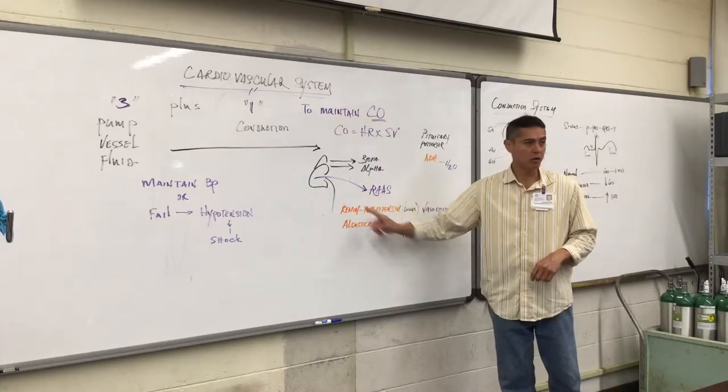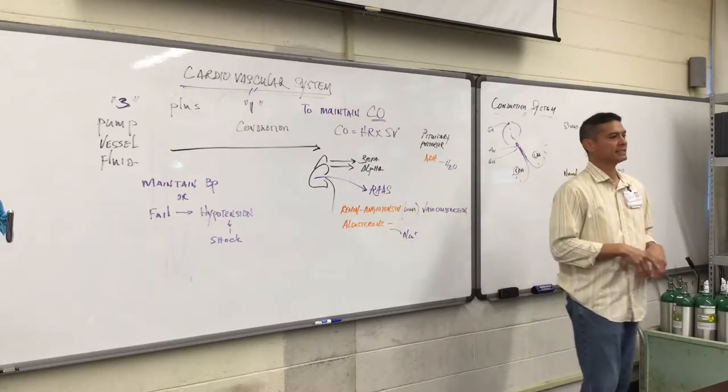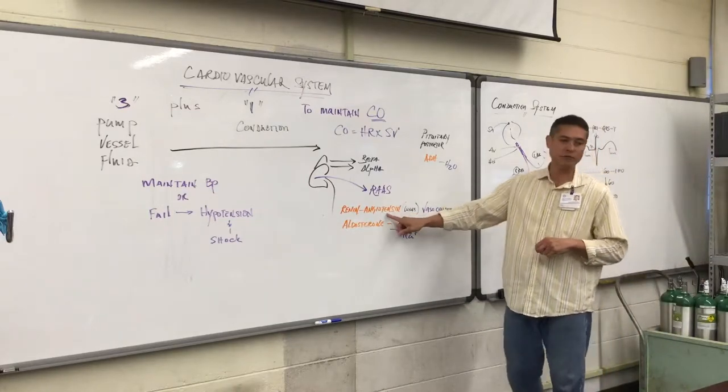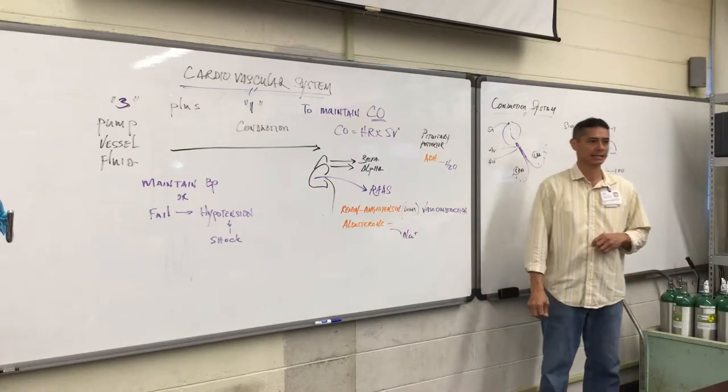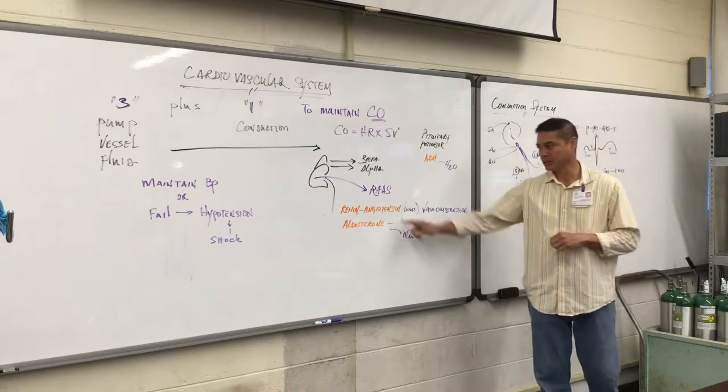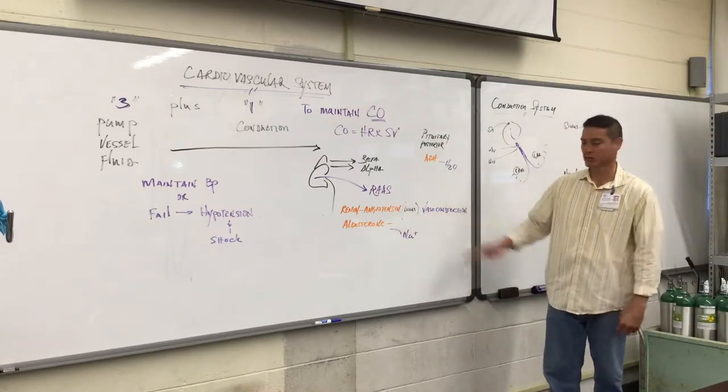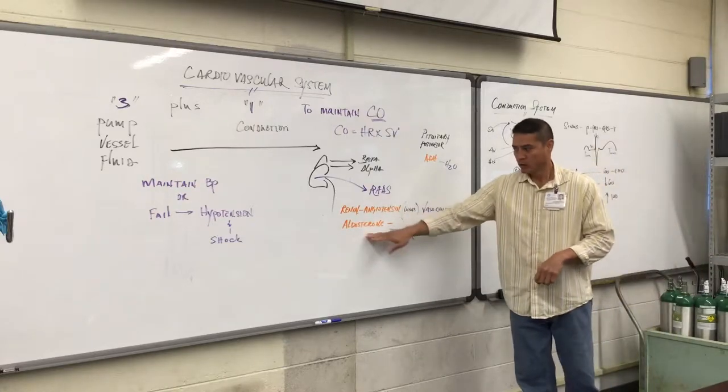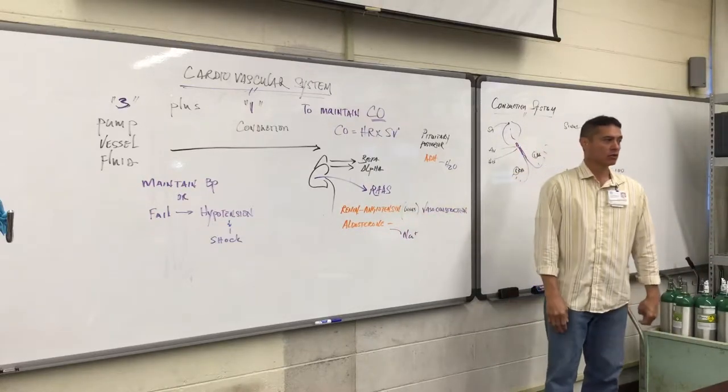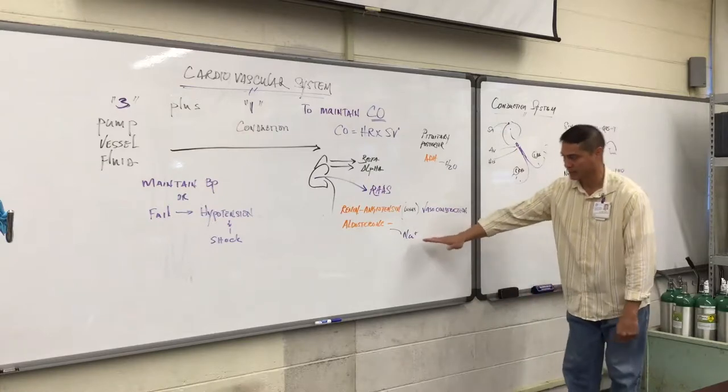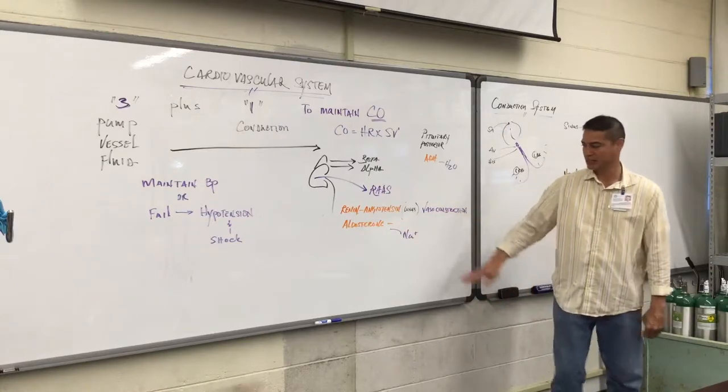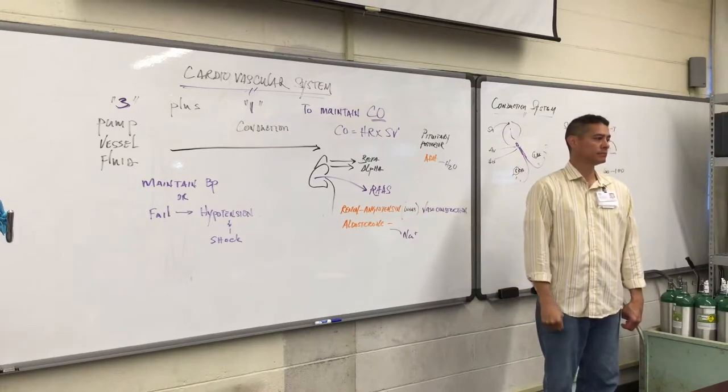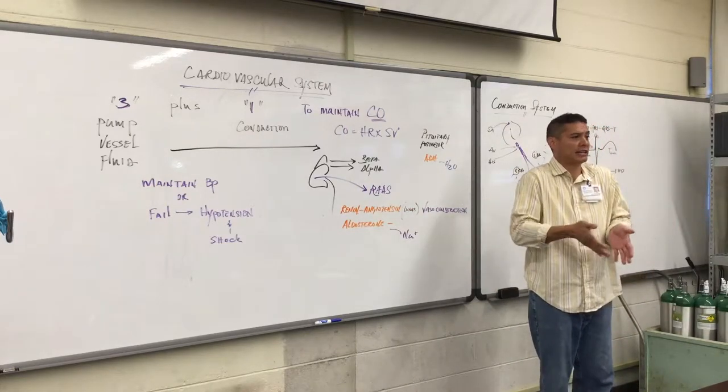They secrete a chemical or protein called renin. This does really nothing, it's just a messenger that when it's in the lungs, it's converted into angiotensin. Angiotensin is a protein vasoconstrictor. We have a lot of vasoconstricting going on. We also have stimulation of aldosterone. Aldosterone, also secreted into the bloodstream, allows the kidneys then to hold back the release of sodium. Holds back the release of sodium, and when sodium is retained, water is also drawn back into the body of bloodstream.